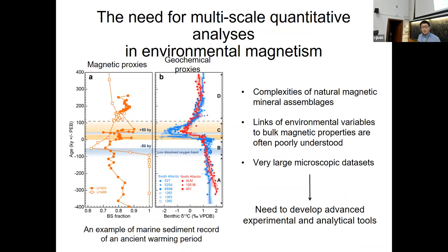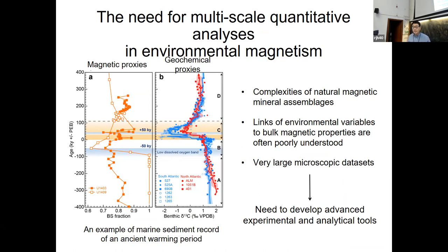In typical environmental magnetism, we measure a core and measure bulk magnetic properties and try to make some interpretations. There are lots of problems — sometimes it's very hard to understand the origin of the signal. We need to have more confidence in interpretations. Macroscopic characterization is very important, but often the microscopic data involves very large images and chemical compositions, which makes it very challenging to do quantitative analysis. That's the main motivation of this project.